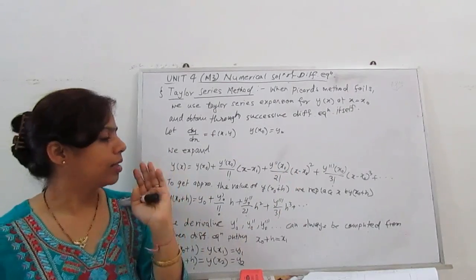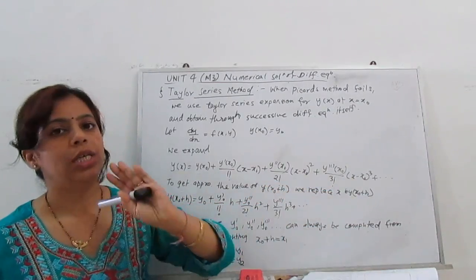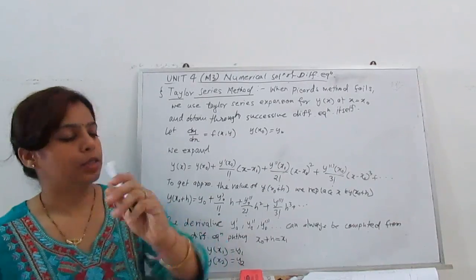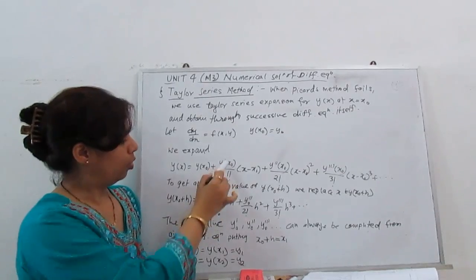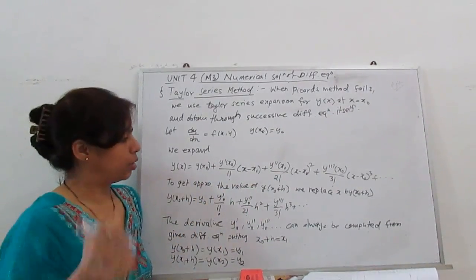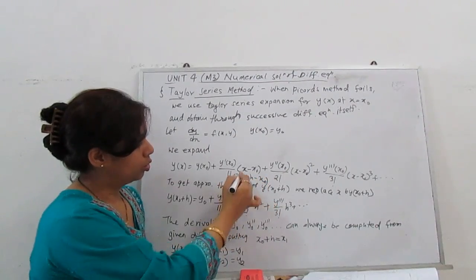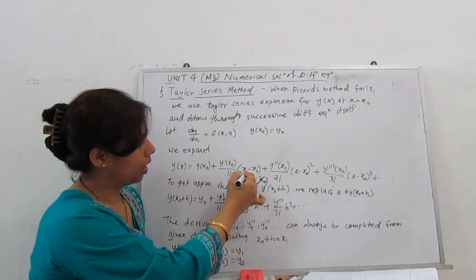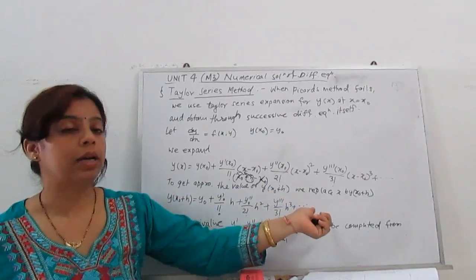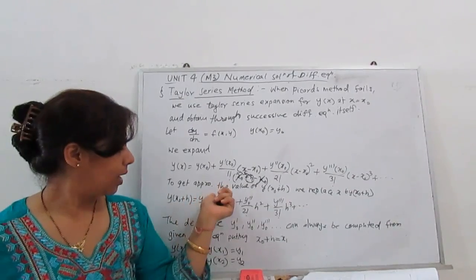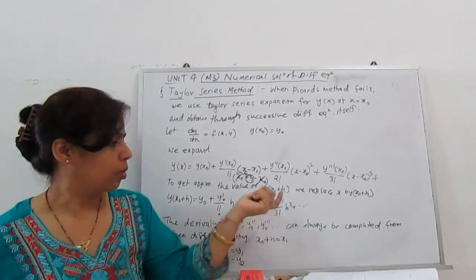To get the approximate value of y(x₀ + h), we replace x by x₀ + h. So at every term where x appears, we replace x with x₀ + h. Then x₀ and x₀ cancel, leaving only h. So the equation becomes: y(x₀ + h) = y₀ + y'₀/1! · h + y''₀/2! · h² + y'''₀/3! · h³ + ... and so on.